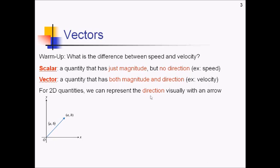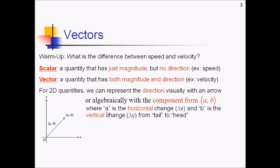So another way of representing the direction of a vector is using something called the component form, which is this little funky a comma b in brackets that you see in that picture there. This means essentially that we have a as our horizontal change. That's our delta x. This is how far we're going left, right. And b is the vertical change, our delta y. And this is just our change as we go from the tail to the head of the vector.